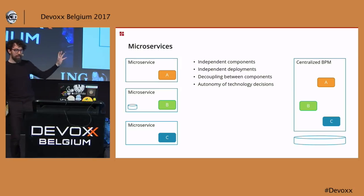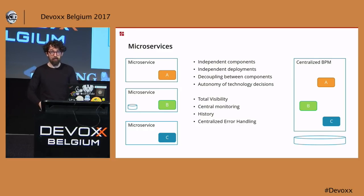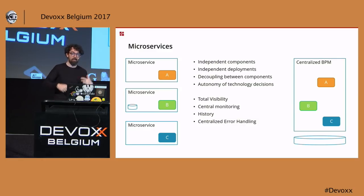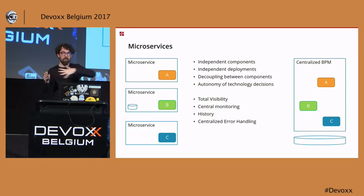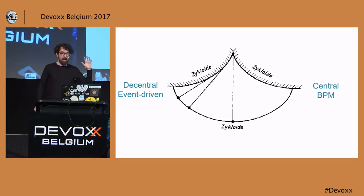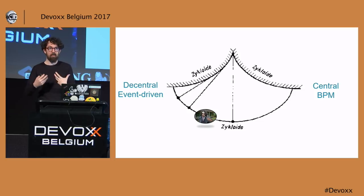I love decoupled components because I don't like relying on another microservice before you can do something. I also like the ability to choose your own data source and language per microservice. But there are nice benefits to what would be seen as an older style system — a centralized point with total visibility where you know what has happened, can monitor it, see history, and handle errors and retries in one place. With microservices, when an error forms I have to trace back through all the services to find where it really occurred.